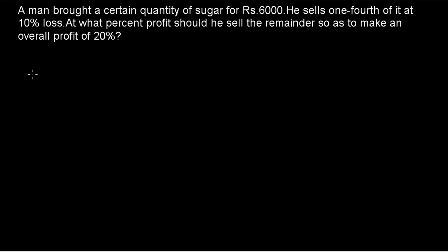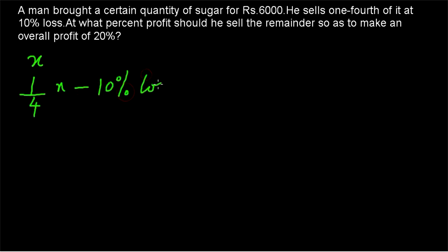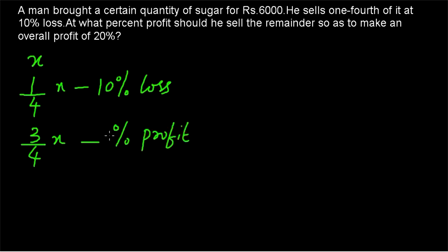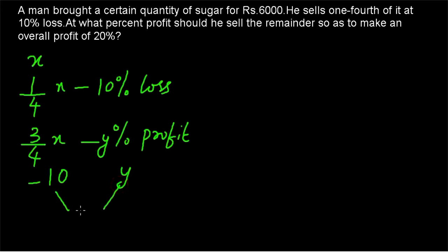A man has bought some quantity of sugar — we don't know the quantity, so let it be X. He is selling one-fourth of X at 10% loss, and the remaining 3/4 of X he is selling at some percentage of profit. We don't know what it is, so let it be Y. Since it is a loss, we represent 10% loss as minus 10.